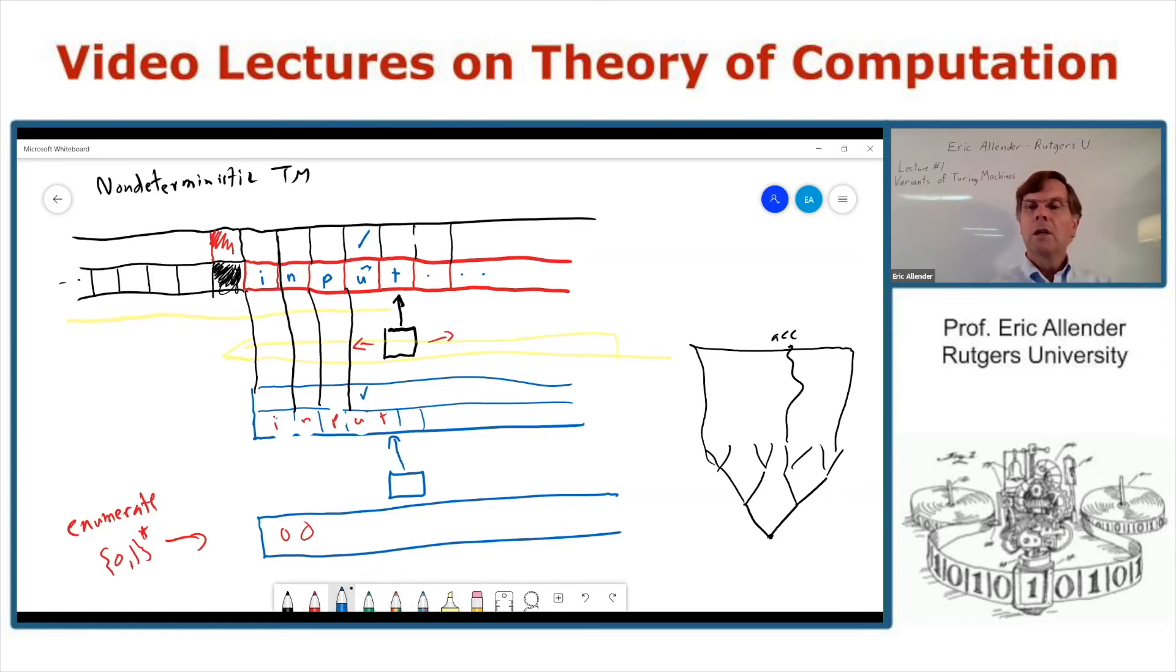So zero corresponds to moving to the left, so zero corresponds to this computation path of length one that just takes the rightmost branch. And if that leads us to an accepting path, then we'll say okay, we accept. Otherwise we look at one, and if that leads us to an accepting path we say we accept. And otherwise we go over here: zero zero would correspond to that path, zero one here, et cetera.